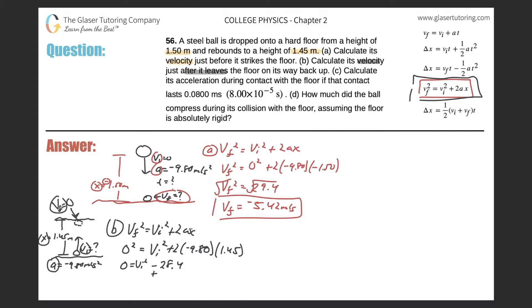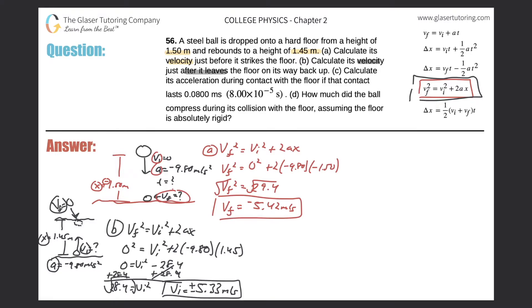Adding 28.4 to both sides — notice it becomes positive, which it should be, since we have to take the square root. So 28.4 equals V_i squared. Taking the square root gives plus or minus the square root of 28.4, which equals 5.33 meters per second. Since the ball is moving upward after rebounding, we choose the positive value. That takes care of letter B.